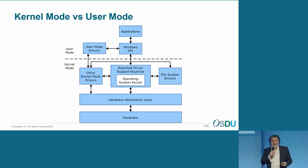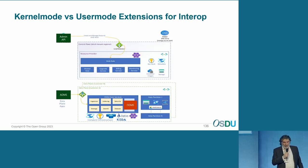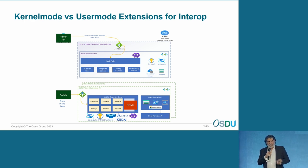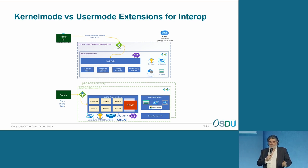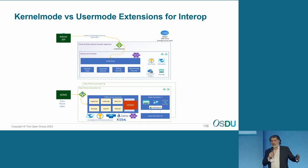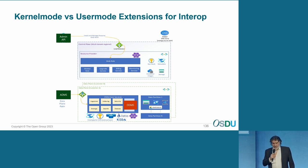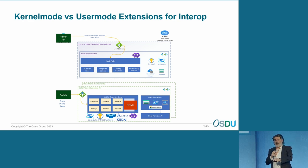The caveat with user mode is that if you need high-performance extensibility, it might not deliver the required performance. Following that same model, we can look at the OSDU physical architecture and see there are external APIs with OSDU where you can build applications, extensions, and SDKs — that's the equivalent of user mode. It's easy to build, easy to test, and it really doesn't affect the system. Then there is the other kind, shown in the red box, which runs inside OSDU itself — the equivalent of kernel mode.